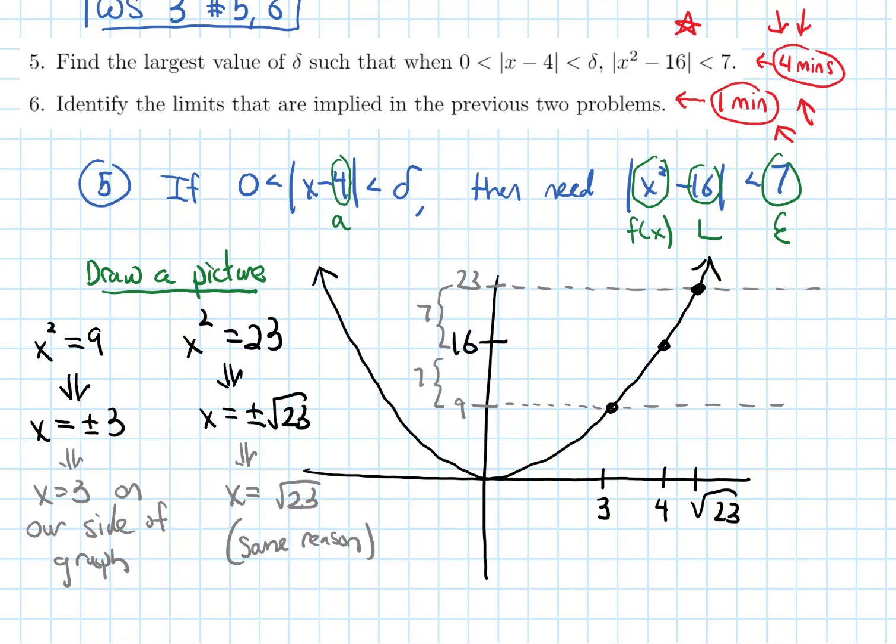So let's label these distances from 4 to these endpoints of our epsilon window. So here is our epsilon. This is an epsilon equals 7 window. So the distance from the 4 to the 3, that's 1. And then for the distance from root 23 to 4, I can do this without a calculator because root 23 is less than a nice square root that I know, square root of 25, which is 5.